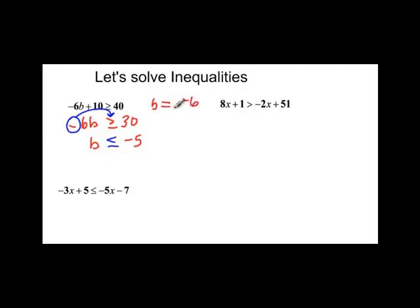So if I come in here and I say negative 6 and then times my b, which is negative 6, right here, and plus 10, that should be greater than 40. Negative 6 times negative 6 is positive 36 plus 10, which is greater than 40 because 46 is greater than 40. It worked.